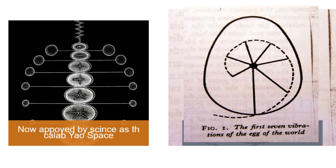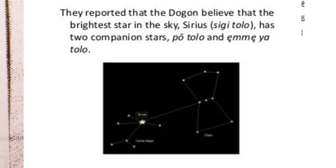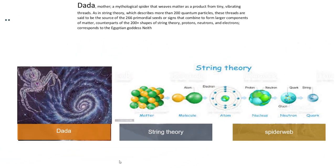But now the Dogons reported that this Po Tolo and Emme Ya Tolo believe that the brightest star in the sky, Sirius, is Sigi Tolo with its companions. So all these were myths that the Dogons knew. But science has now come to prove and says it's true.